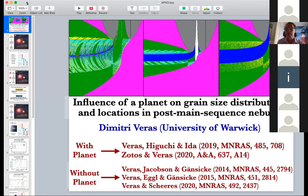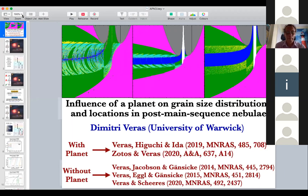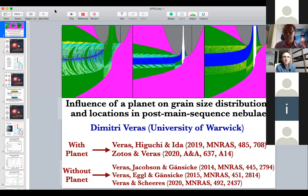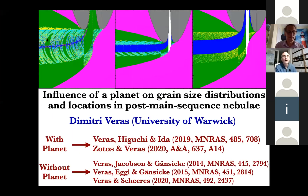The next speaker, Dimitri Veras, will talk about the dust inside systems to be the planet. Hi everybody, can you see my screen okay? Yes, I can see your screen. I've just put it into slideshow mode. Well everybody, thanks very much for letting me talk at my first APN conference. My name is Dimitri Veras from the University of Warwick, and I'm happy to talk to you today about grain-sized distributions in planetary systems around asymptotic giant branch stars.